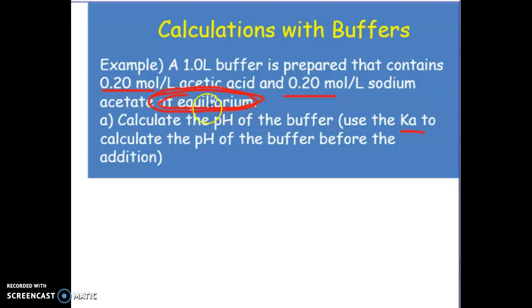Now let's see - if this did not say at equilibrium and it just told us the concentrations, essentially you would have to create an ICE table, solve for x, x would be your hydronium, and then you can solve for pH that way.